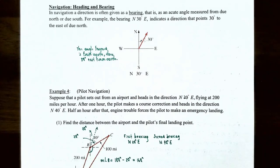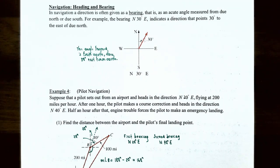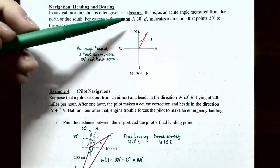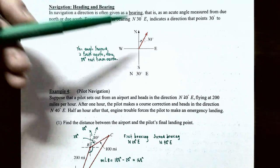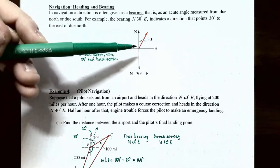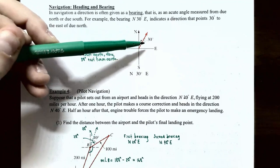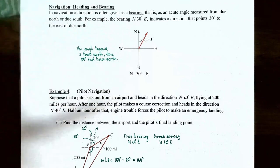Let's finish by talking about navigation, heading, and bearing. In navigation, a direction is often given as a bearing, which is an acute angle measured from due north or due south. For example, N30°E indicates a direction 30 degrees east of due north — the angle between north and the heading direction is the bearing.